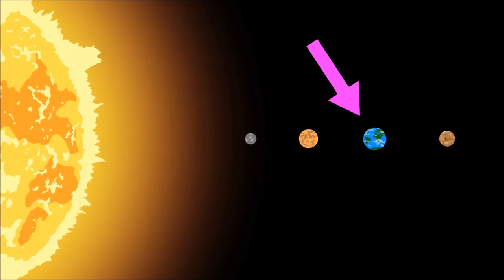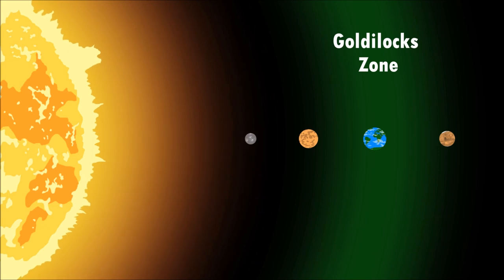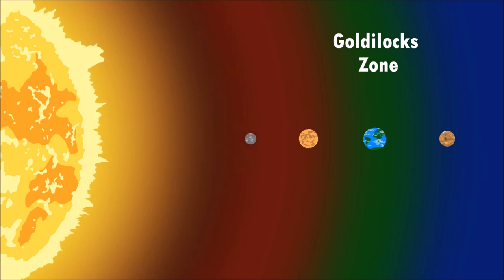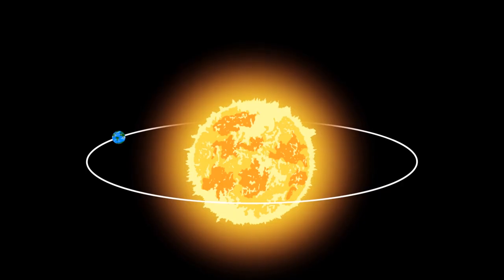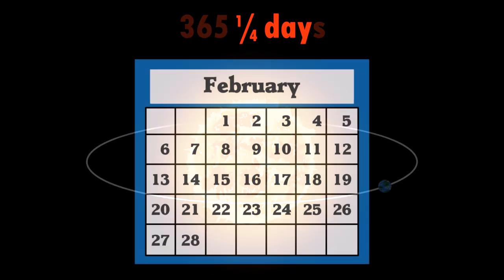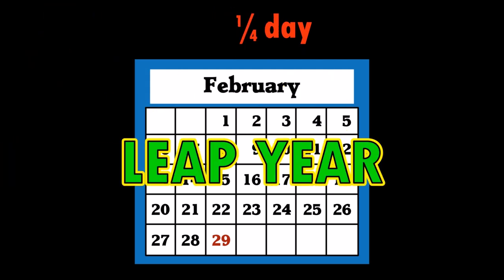Earth is the third planet from the Sun, situated in the Goldilocks Zone where it's far enough away from the Sun that it's not too hot and not too cold. It takes 365 and a quarter days for Earth to rotate around the Sun. The quarter day is the reason why we have an extra day at the end of February every four years. This is called a leap year.